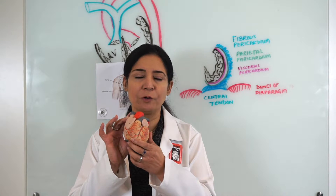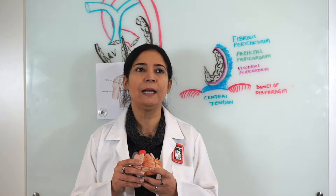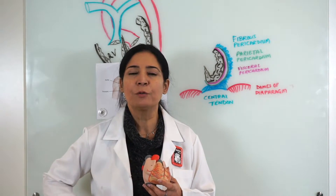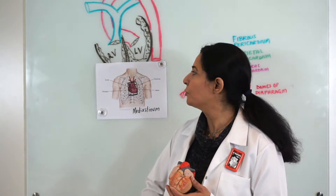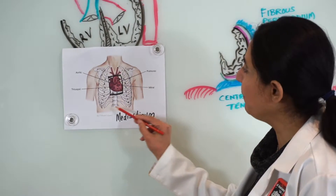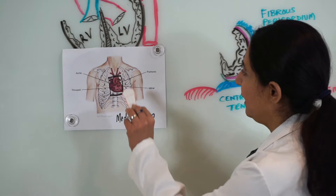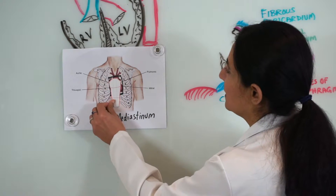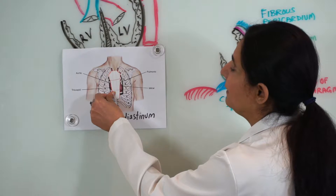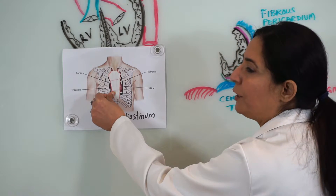I'm going to use this model later on. First, let me give you an idea of how the heart has been placed in the chest cavity or the thoracic cavity. I have a drawing in front of you. Here you can see this is the rib cage, and the rib cage is being attached to this flat piece of bone present in the center of the chest wall. This bone is known as the sternum.